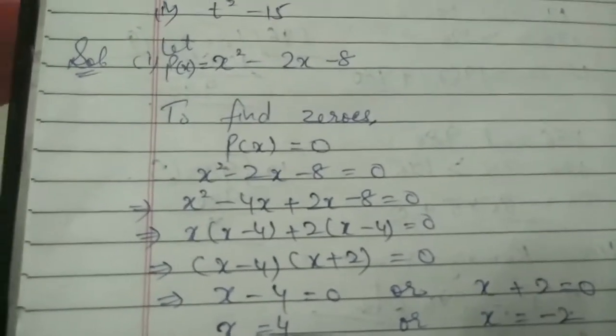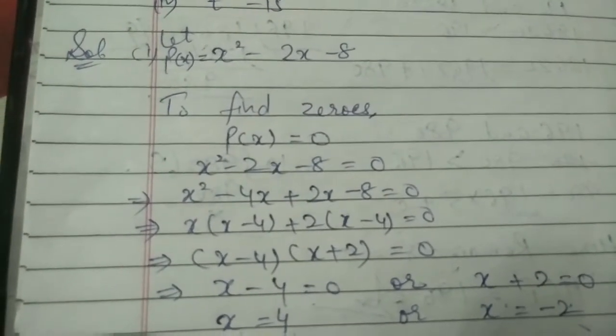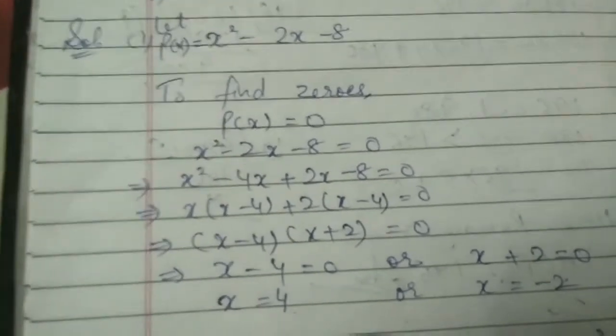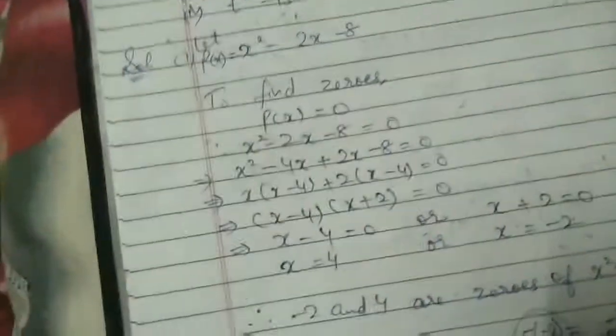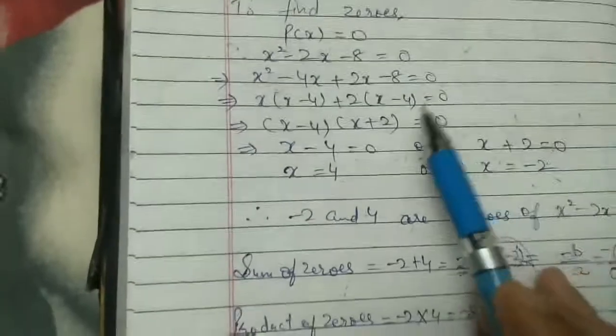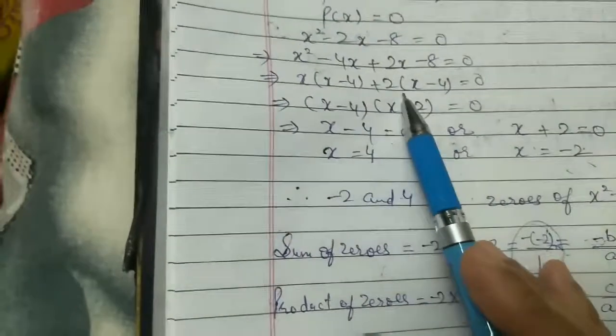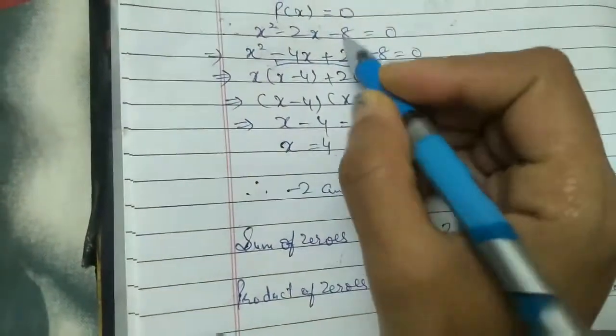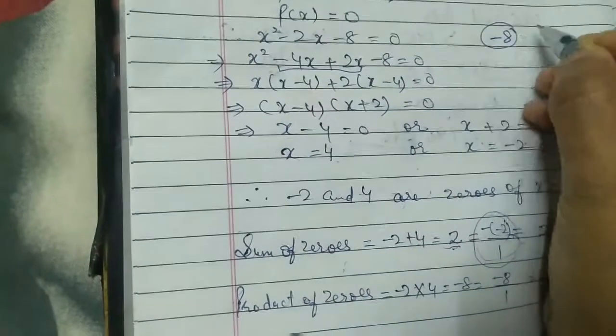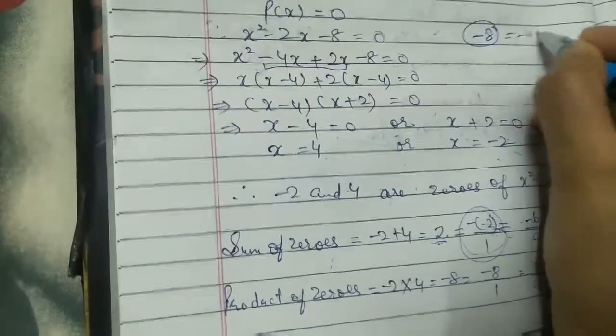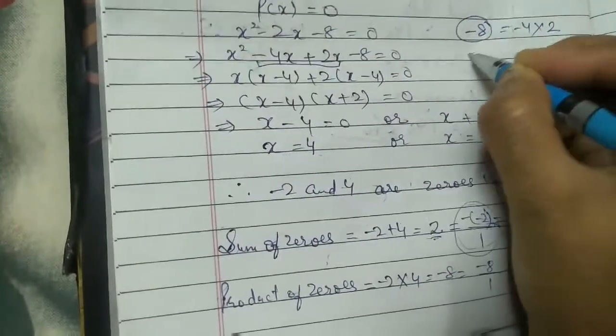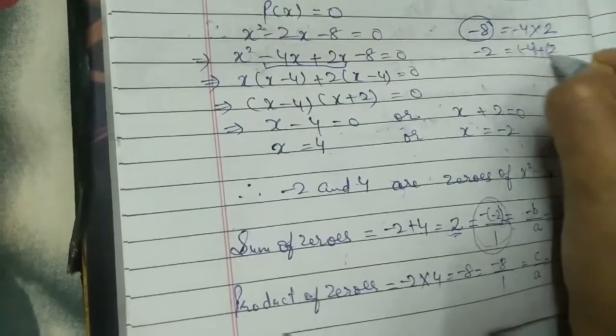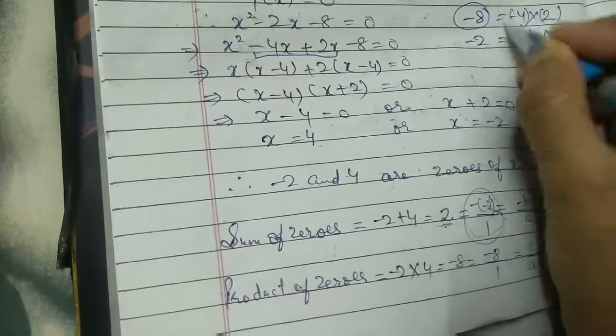To find zeros, we set the equation equal to zero. Now we factor: x² - 4x + 2x - 8. We can write this as -4 times 2 equals -8, and -4 plus 2 equals -2. So we get the factors (x - 4)(x + 2) = 0.